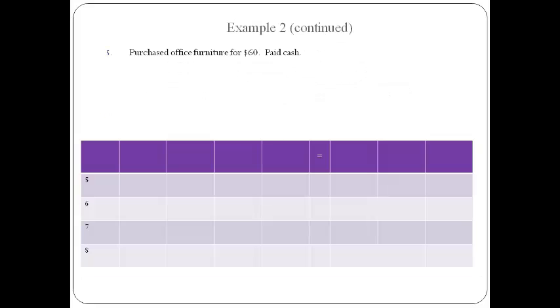Office furniture is received and cash is paid. The amounts are recorded in the cash column and the office furniture column. Increases are recorded with a positive and decreases are recorded with a negative.